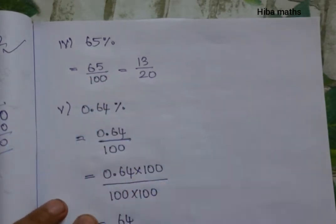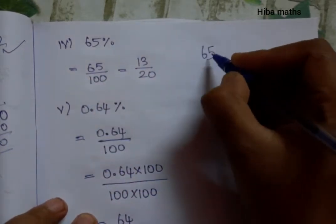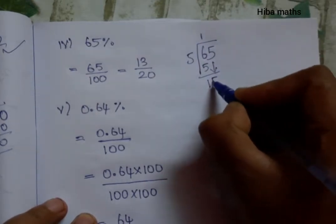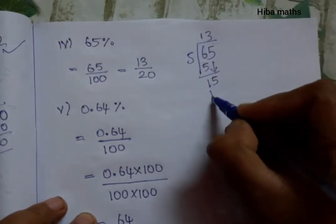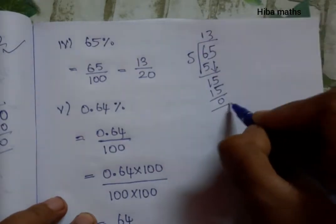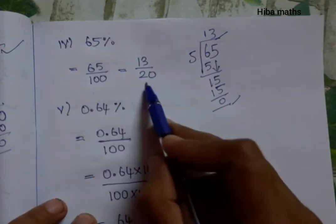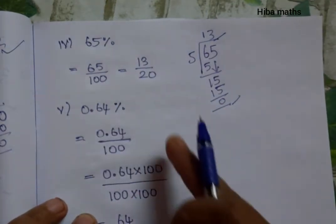Using the 5 times table, we divide both by 5. 65 divided by 5: 5 goes into 5 once, remainder 1 makes 15. 5 goes into 15 three times, giving us 13. For the denominator, 5 times table: 100 divided by 5 equals 20. The answer is 13 over 20.